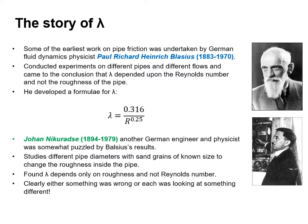However, Johann Nikuradse, another German physicist and engineer, was somewhat puzzled by Blasius's results. He studied different pipe diameters with sand grains of known size to change the roughness of the inside of the pipe, and found that lambda depends on the roughness and not the Reynolds number. Clearly either something was wrong, or each was looking at something slightly different.